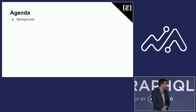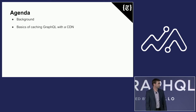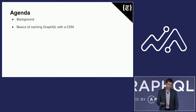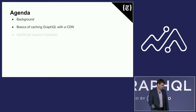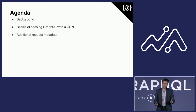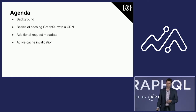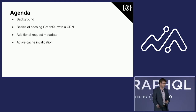First, a little background on what GraphQL looks like at the New York Times. Then I'll go over some basics of caching GraphQL with the CDN. If you were here for the previous talk, there's a little overlap, but I think this is a practical application of what Marc Andre was talking about. Then I'll be talking about how additional request metadata can affect how you cache GraphQL. Finally, I'll talk about how we ensure that our caches are the freshest possible, which is very important for a news organization, and how we do active cache invalidation.